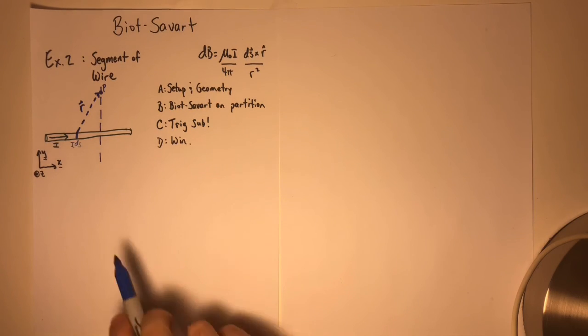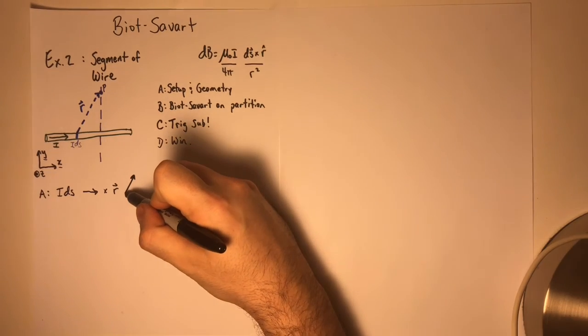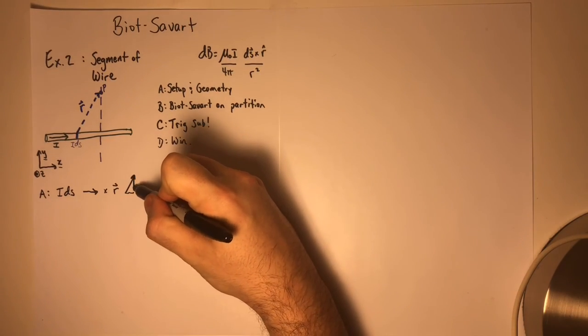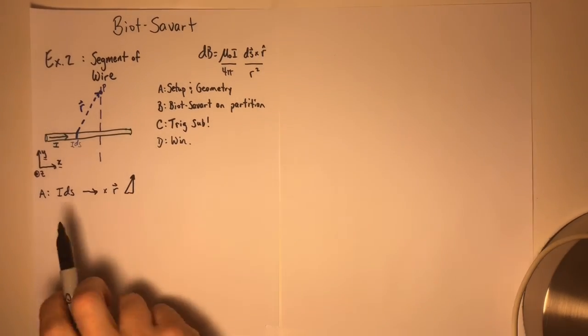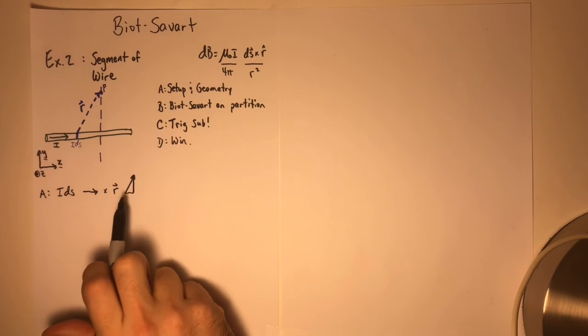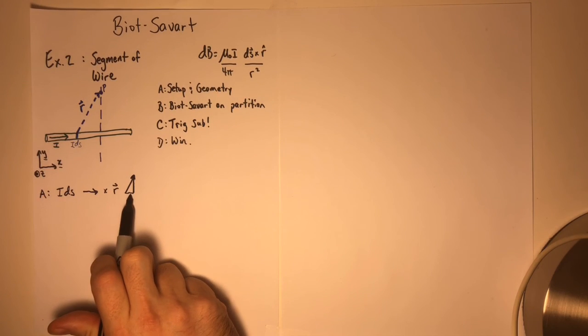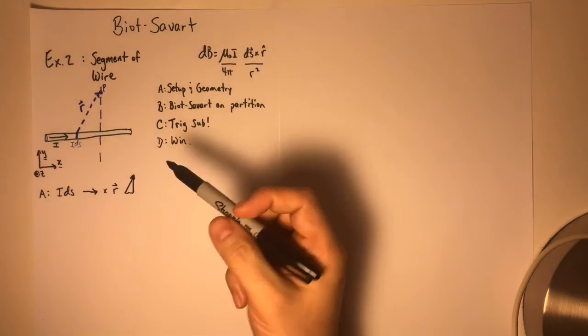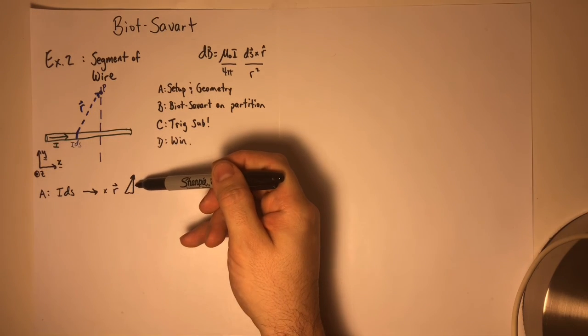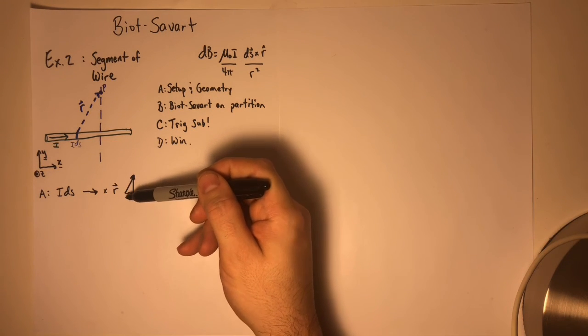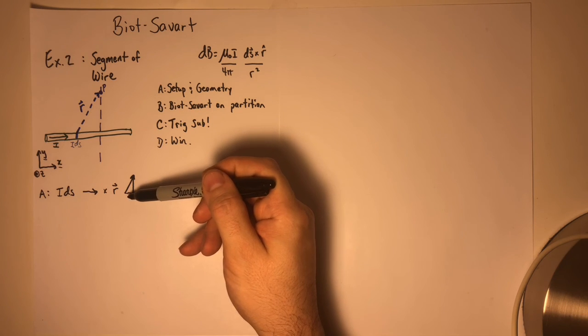But all I'm doing now is showing you what the cross product will do. Take a moment to think about it. You'll see that R has a component that points perpendicular to IDS, and it has a component that points parallel to IDS. The component that points perpendicular is the only one that's going to matter. The other part points parallel to DS, so it's not going to do anything in the cross product.